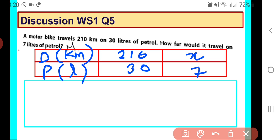We see that here in 30 liters of petrol it travels 210 kilometers. Now we need to find out in 7 liters of petrol how much distance will be traveled.